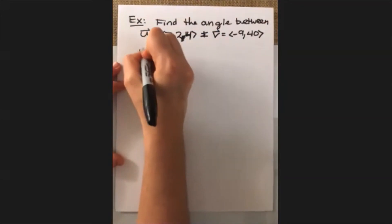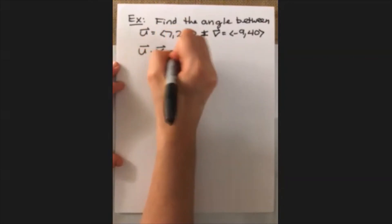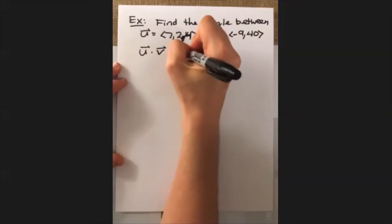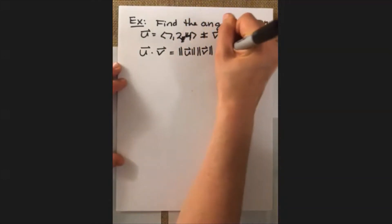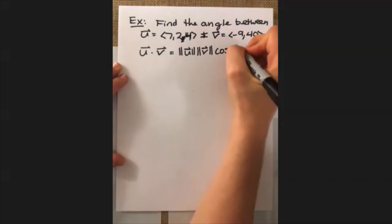So we know that our dot product gives us a relationship between their length and then the angle between them. So this is what we want to solve for.